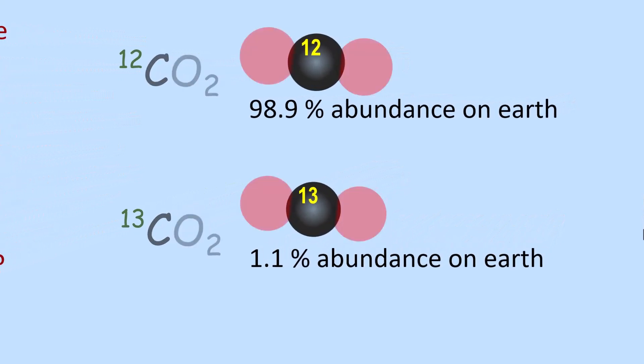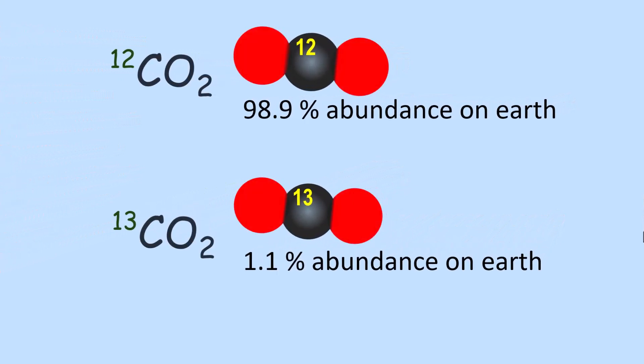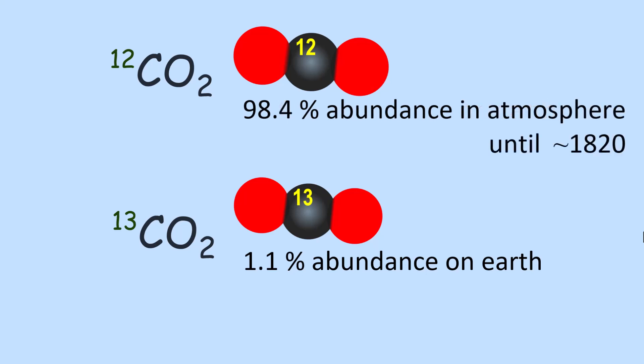If we look at the carbon isotope presence in carbon dioxide, the atmospheric abundance changes very slightly to 98.4% for carbon-12 CO2 and 1.6% for carbon-13 CO2. However, these abundances were the pre-industrial amount and started to change with industrialization around 1820 — the beginning of more significant burning of fossil fuels, which produces carbon dioxide.